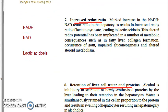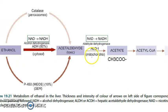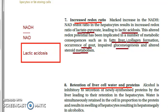Seventh point: increased redox ratio. As alcohol is oxidized, NAD is reduced to NADH, so the NADH:NAD ratio increases. This altered redox potential leads to lactic acidosis through altered lactate-pyruvate metabolism. The consequences include fatty liver, collagen formation, gout, impaired gluconeogenesis, and altered steroid metabolism.